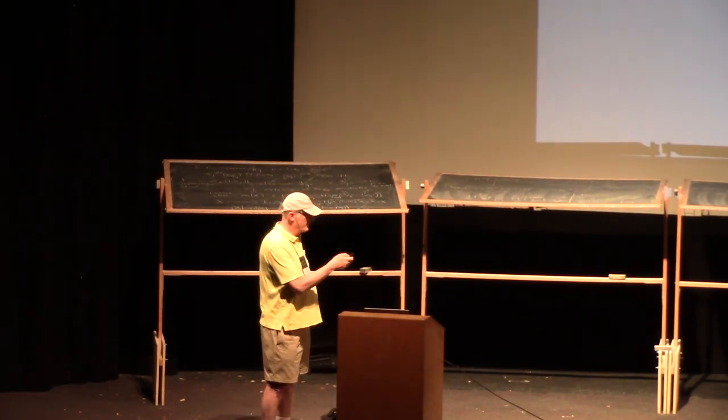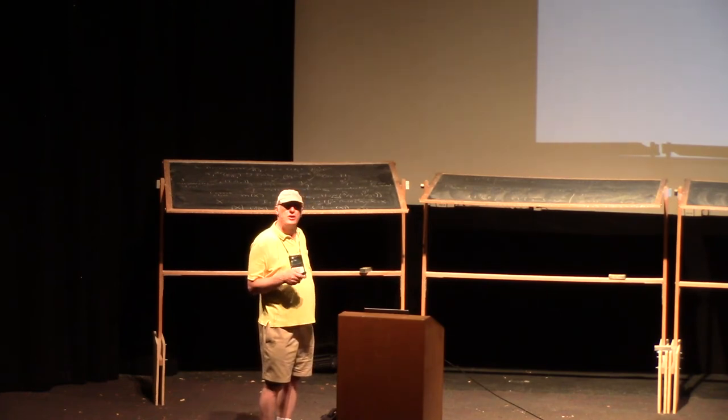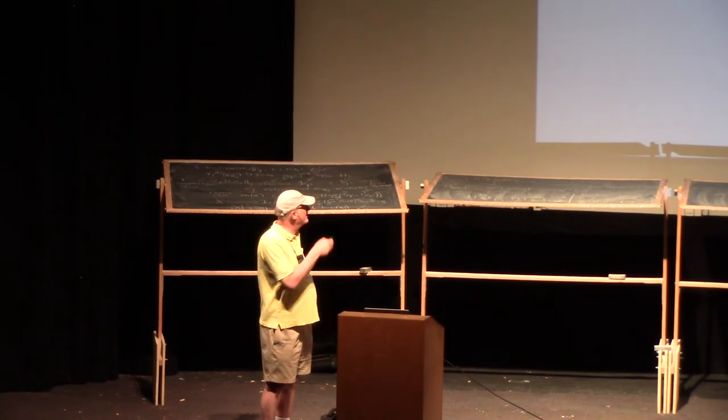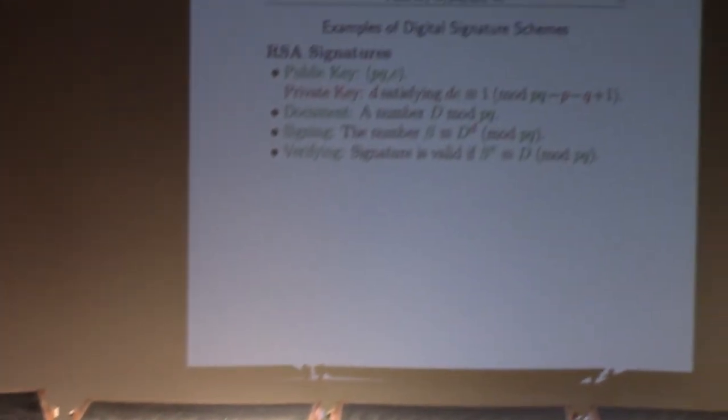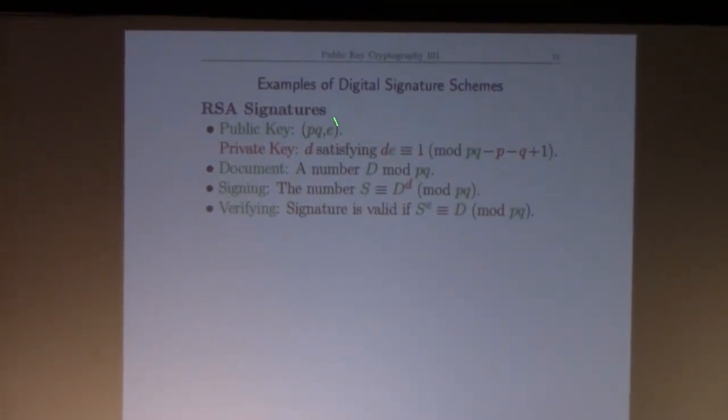Here's how RSA signatures work. I'm going to go through these really quickly. If you haven't seen them, you should look at them in the problem session and check that they work. It's a bunch of fun number theory and algebra. RSA signatures: same setup with a product of primes and exponents. Now the private key is the solution to that congruence used to decrypt before. The document is a number D. Bob raises his document to this secret power, and that's his signature. To check the signature is valid, Alice takes the supposed signature, raises it to the e power—that was published—and checks that she gets the document back.